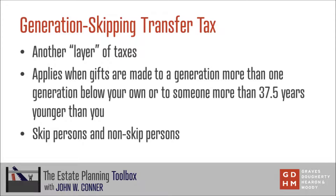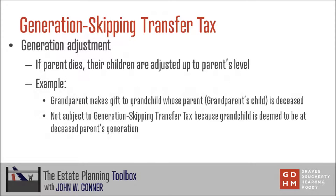One thing to keep in mind is that even though someone might be more than one generation below your own, they could very well have a generation adjustment made to where the tax code would treat them as not more than one generation below your own. The primary example of that would be if you have children and grandchildren and one of your children dies — that child's children, your grandchildren, would have their generation adjusted up so that they would be considered at the same generation as your children, meaning that any gifts made to them would no longer be subject to the generation-skipping transfer tax.